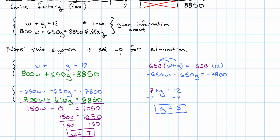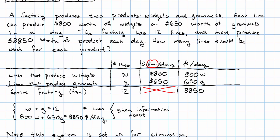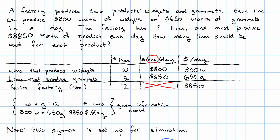Finally, we need to go back and answer the question. How many lines should be used for each product? 7 for widgets and 5 for grommets.